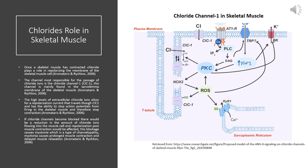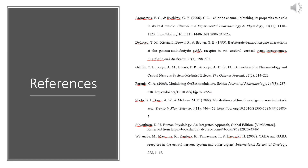If chloride channels were to become blocked, there would be a reduction in the amount of chloride ions flowing into the muscle cell, meaning that repolarization post muscle contraction would be affected. This blockage causes myotonia, which is a type of channelopathy. People affected by myotonia suffer from prolonged involuntary muscle contraction and don't have the ability to consciously relax muscle. That's all for my presentation today on chloride's importance in the central nervous system, smooth muscle, and skeletal muscle — I hope you enjoyed.